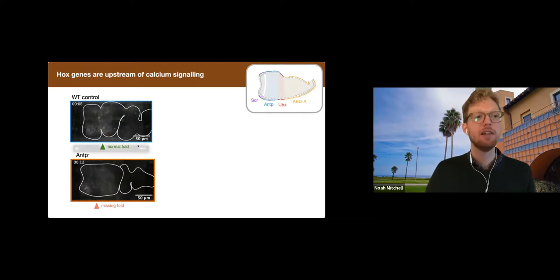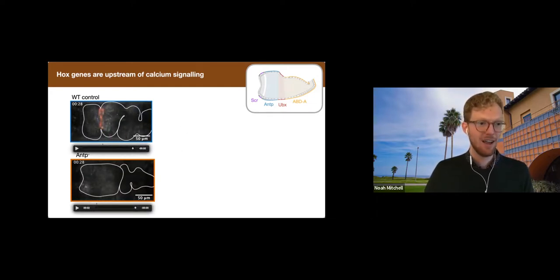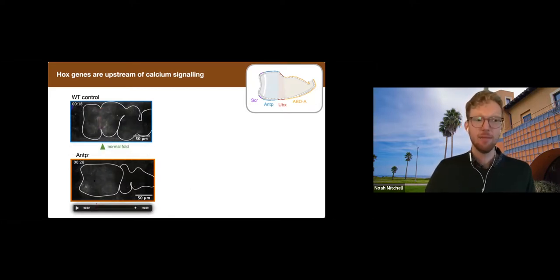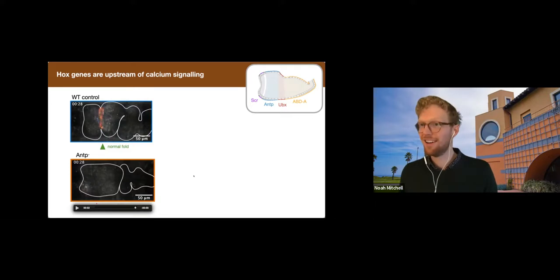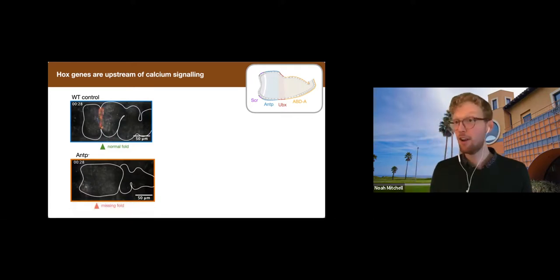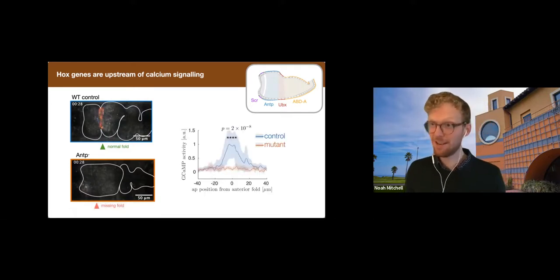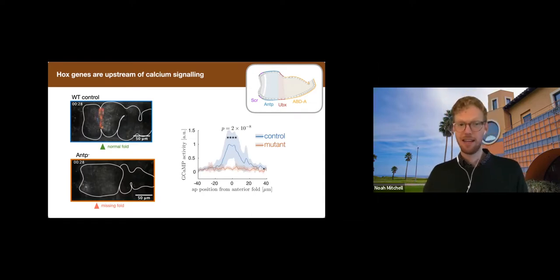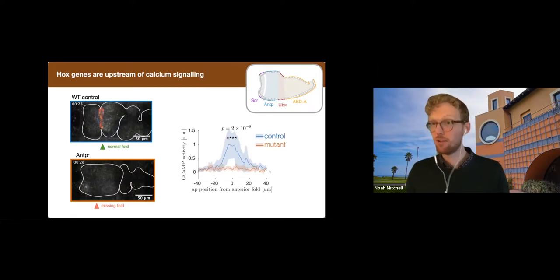And these are both videos that will advance to their final shape and outline. And I'll play this one more time. So in the Antennapedia mutant, there's really no calcium activity for an extraordinarily long sustained period of time. This is very robust. So in these Antennapedia mutants, we have very little calcium activity for over an hour, in fact.